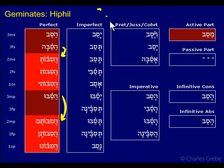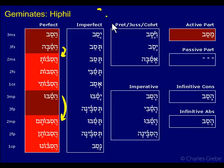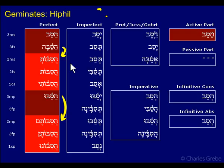So in the geminates you don't have that at all. It's a bit harder to recognize a Hiphil in the geminates because you don't have hiriq yod anywhere. For the second person switch, we have the prefix vowel that reduces, the theme vowel reduces, and we have the helping vowel.